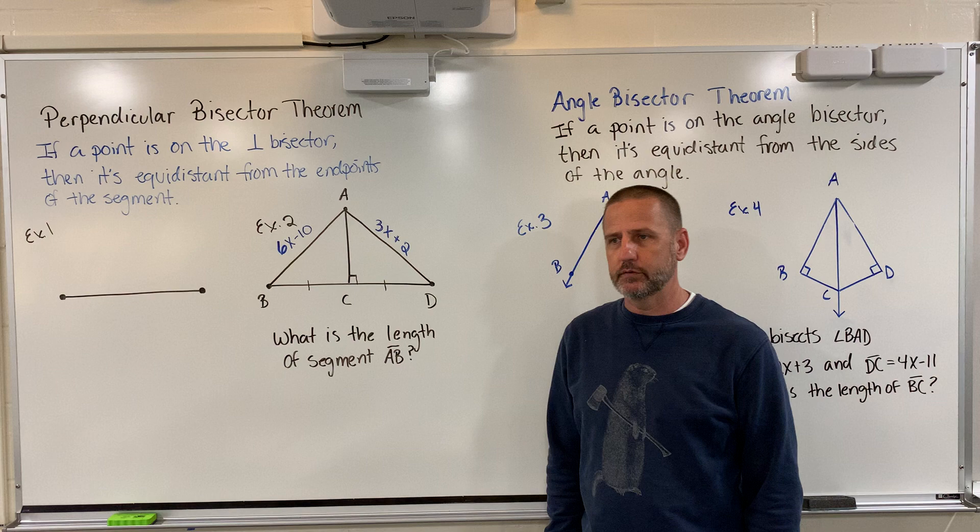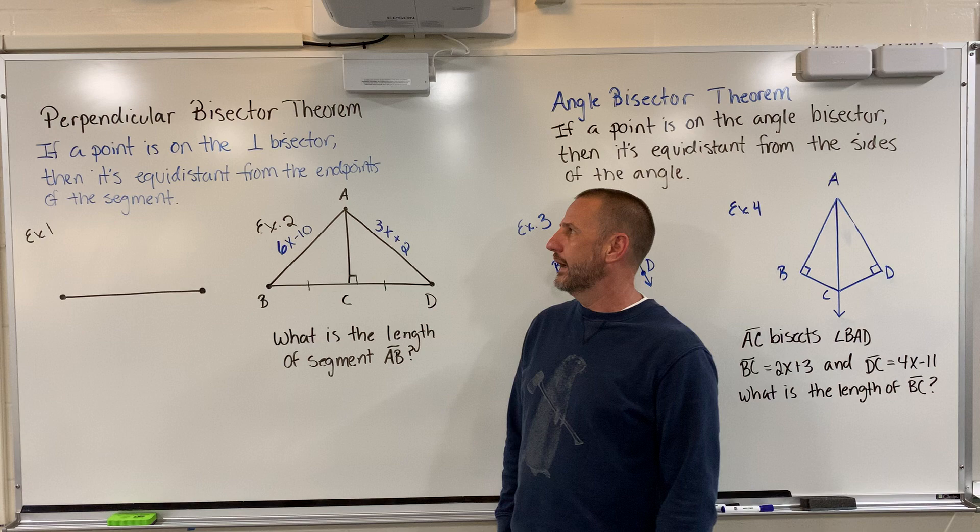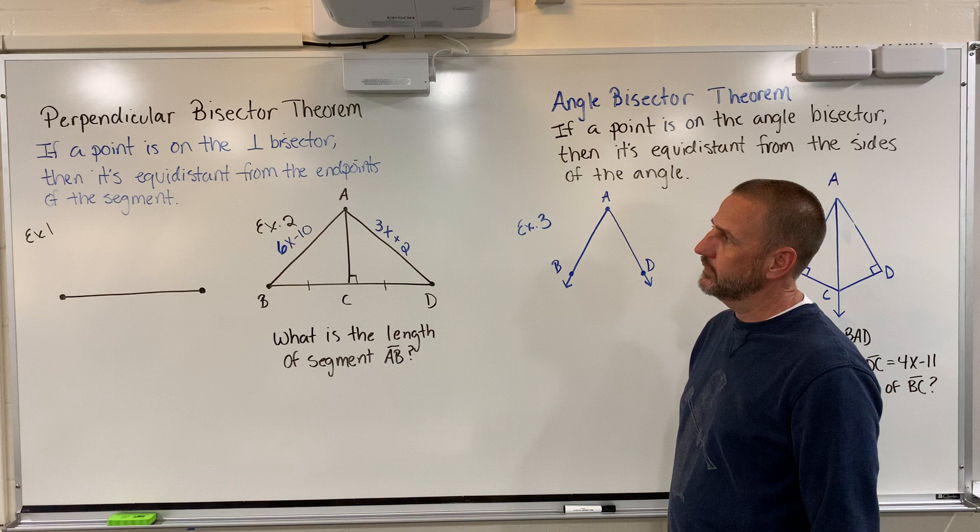Today we're looking at a new lesson in the book, new chapter of our book, and we're going to start off with something called the Perpendicular Bisector Theorem. The theorem goes, if a point is on the perpendicular bisector, then it's equidistant from the endpoints of the segment.